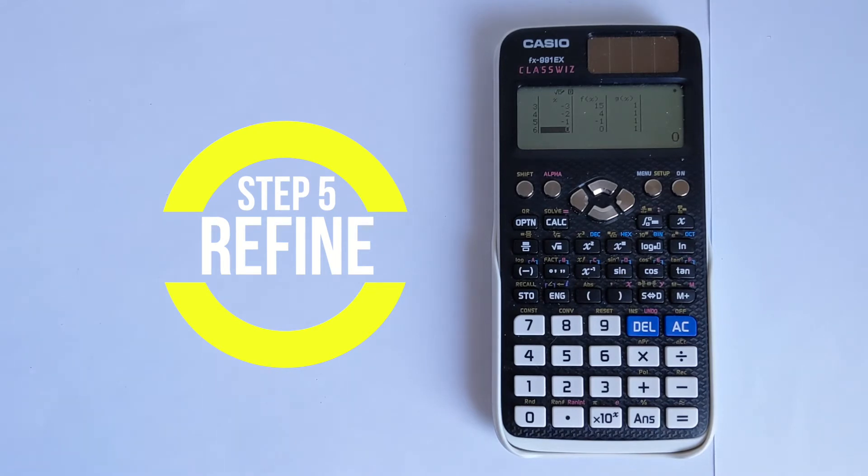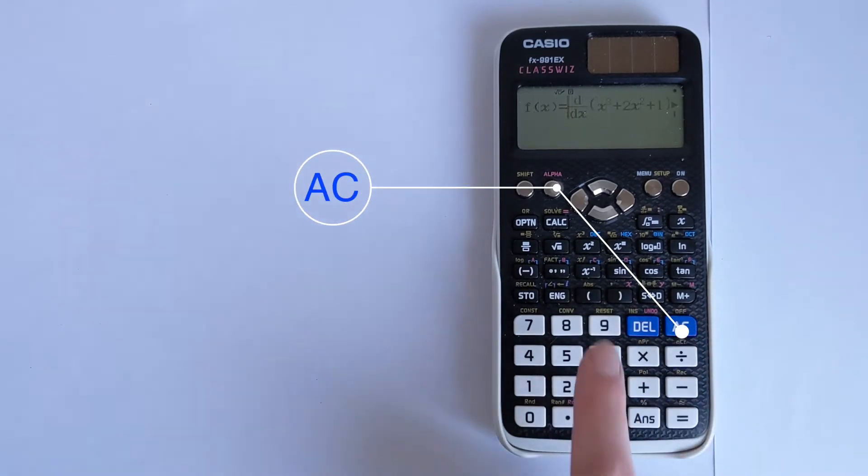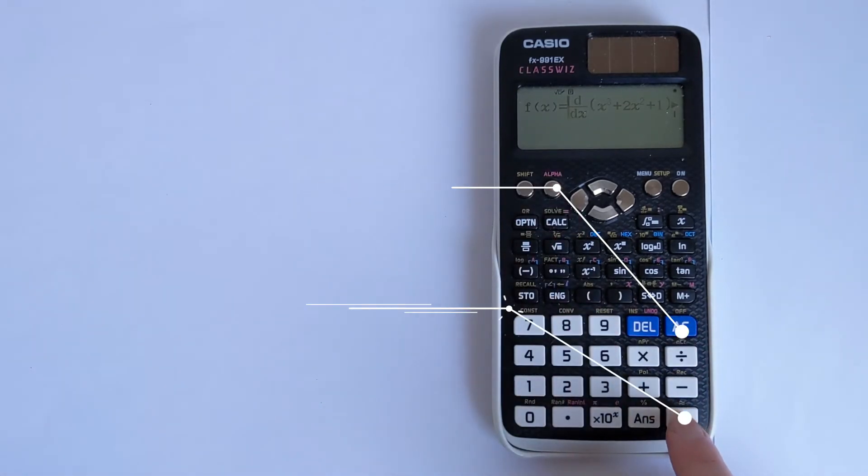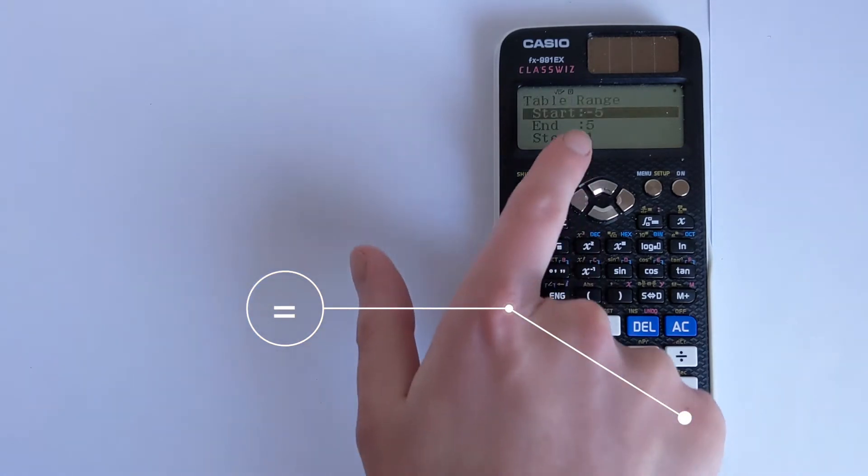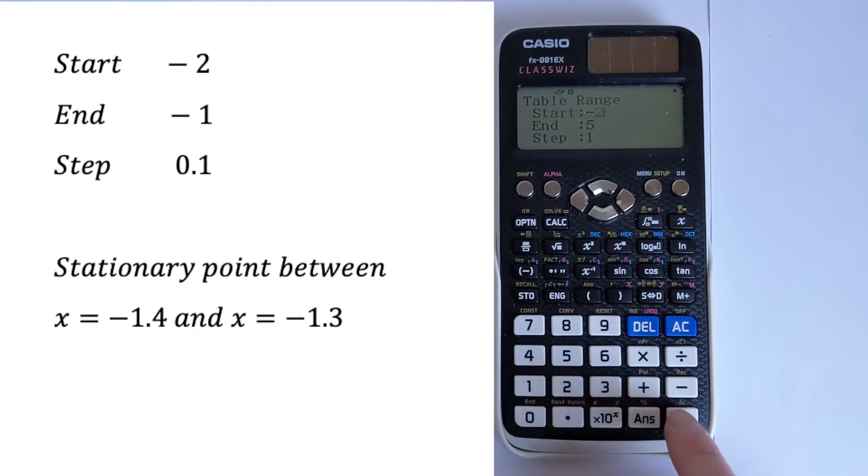So we're going to remember the numbers -2 and -1. And we're going to press AC to go back to here. Then we're going to go equals, equals again, and we're going to edit the range. So let's go between -2 and -1. And then let's have a much smaller step. So 0.1.